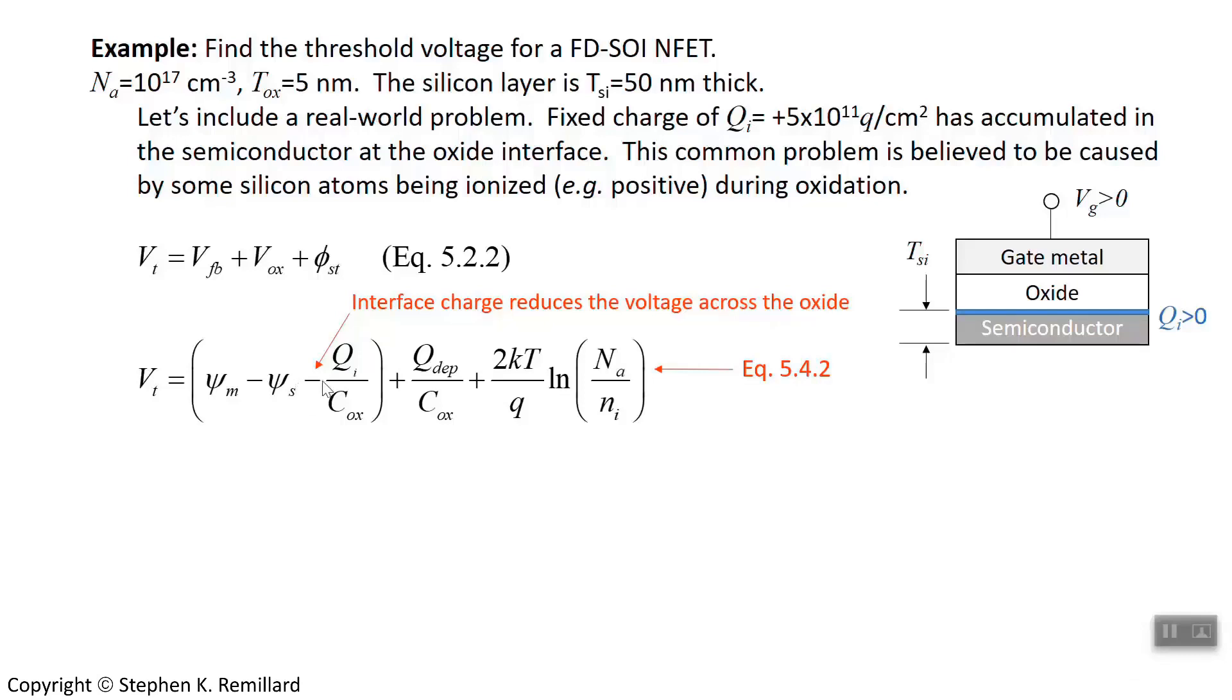One way to rationalize this minus sign here is that the depletion layer that you get from oxide voltage, the depletion layer is negatively charged in a P body because the depletion layer is made up of acceptor ions. The interfacial charge is opposite in sign as positive. So whatever sign is here certainly needs to be opposite here. That's the easiest way to rationalize that minus sign being present.